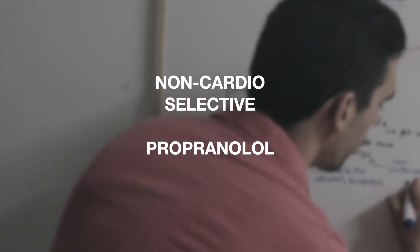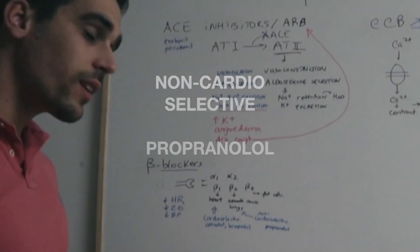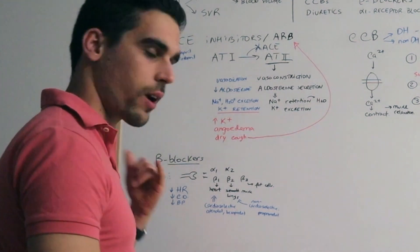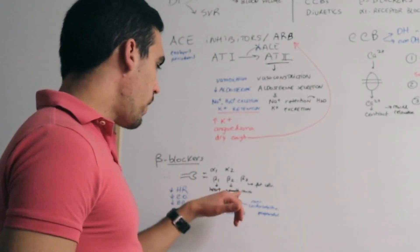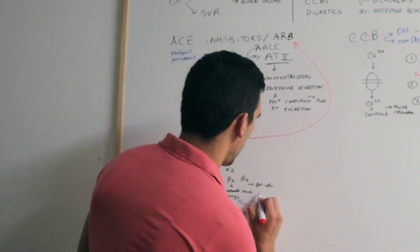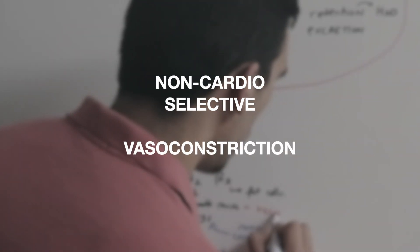The non-cardioselective will act on any beta. One example is propranolol, and they will have other side effects apart from diminishing the heart rate. When they act on the smooth muscle, the non-cardioselective can cause vasoconstriction.